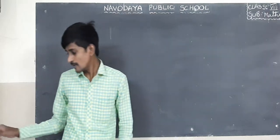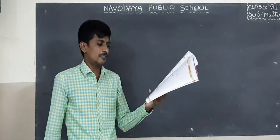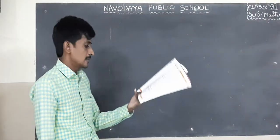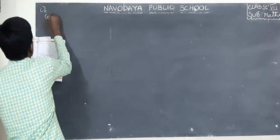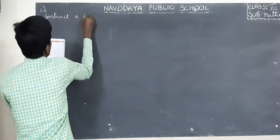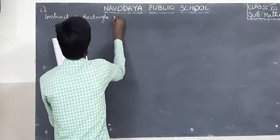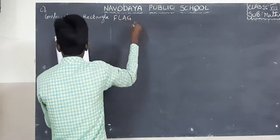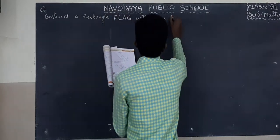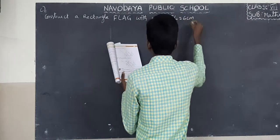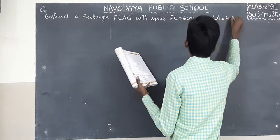Good morning students. Yesterday I explained exercise 3.4, first sum. Today I will explain third sum, C sum: construct a rectangle FLAG, with FL equals to 6 centimeters and LA equals to 4.2 centimeters.